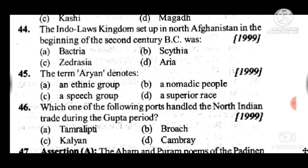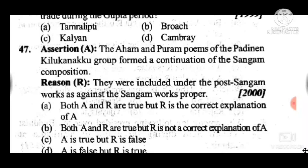Question 46: Which one of the following ports handled north Indian trade during the Gupta period? Answer is Tamralipti. Question 47: Both assertion A and reason R are true, and R is the correct explanation of A — the Aham and Puram poems of the Padinen Kilukanakku group formed a continuation of Sangam composition; they were included under post-Sangam works.